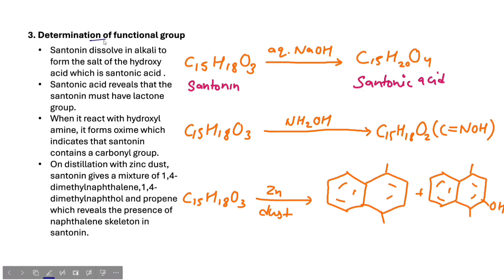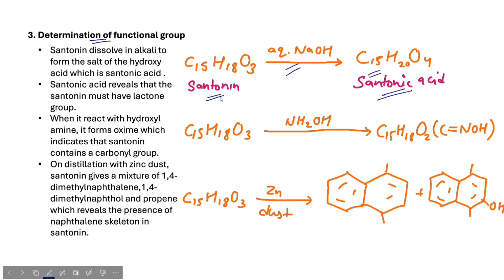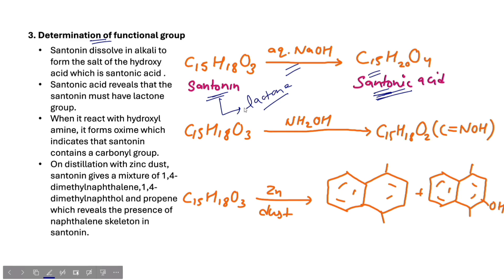The next point is Determination of Functional Group. We will identify the functional groups in Santonin by treating it with different reagents. In the first reaction, we take Santonin and dissolve it in alkaline solution. We obtain a Hydroxy Acid, which is called Santonic Acid. This indicates that Santonin contains a Lactone group.